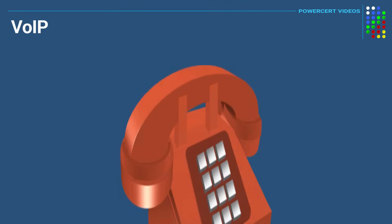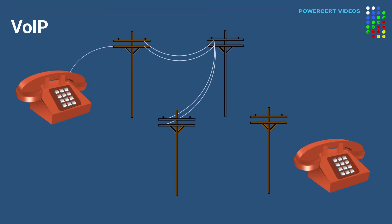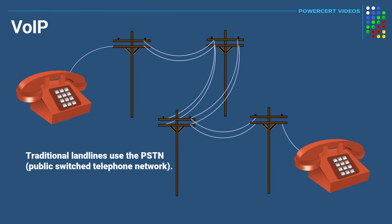Before VoIP, people would make phone calls the old-fashioned way, using traditional landlines where communications use PSTN, or Public Switched Telephone Network. You would have a telephone, dial a number, and through an electronic switch be connected to the other person.